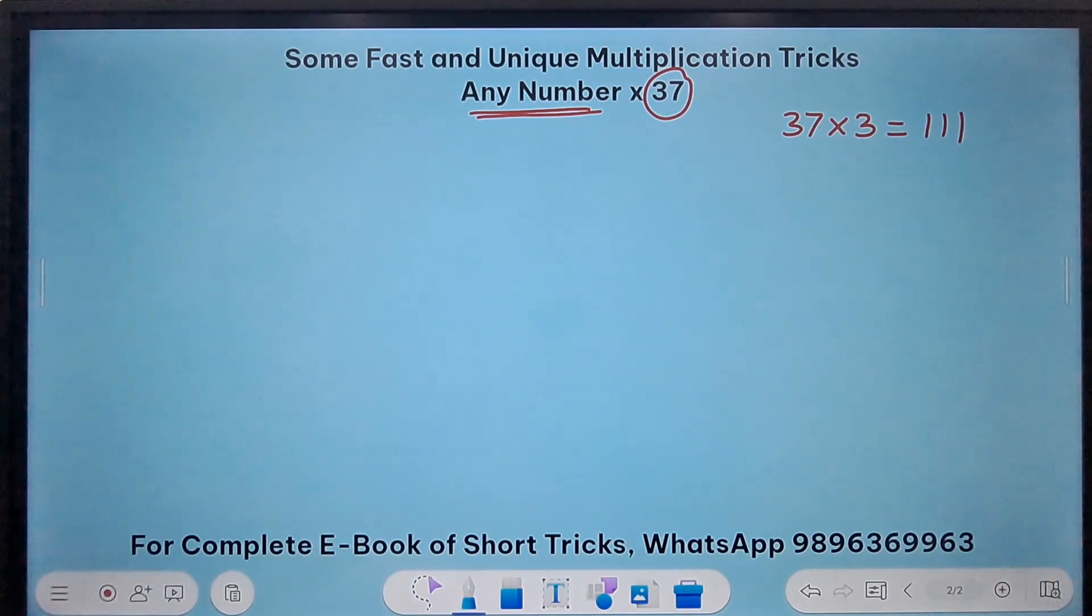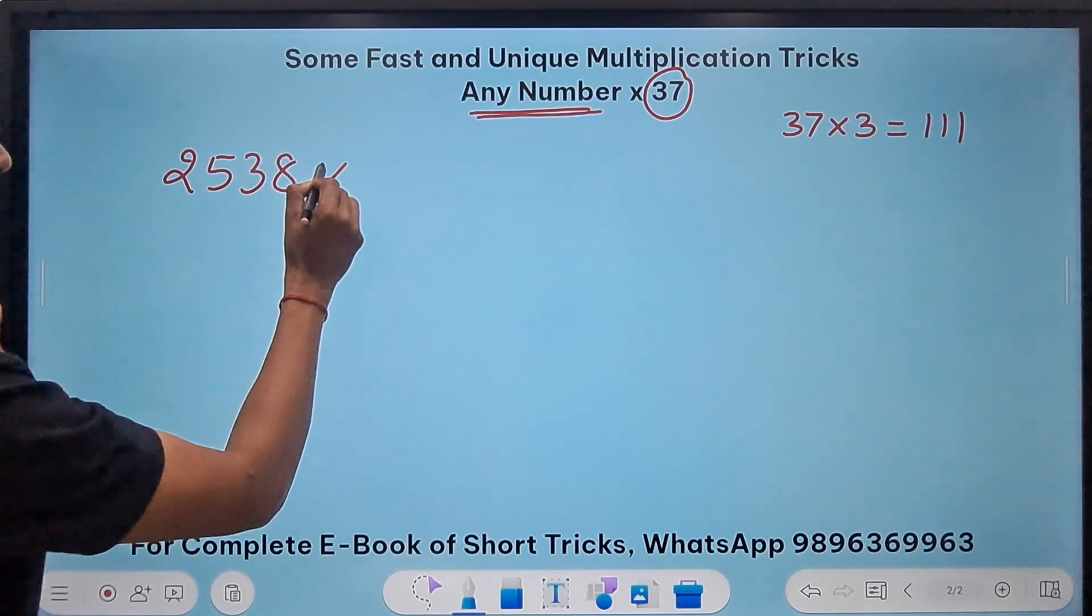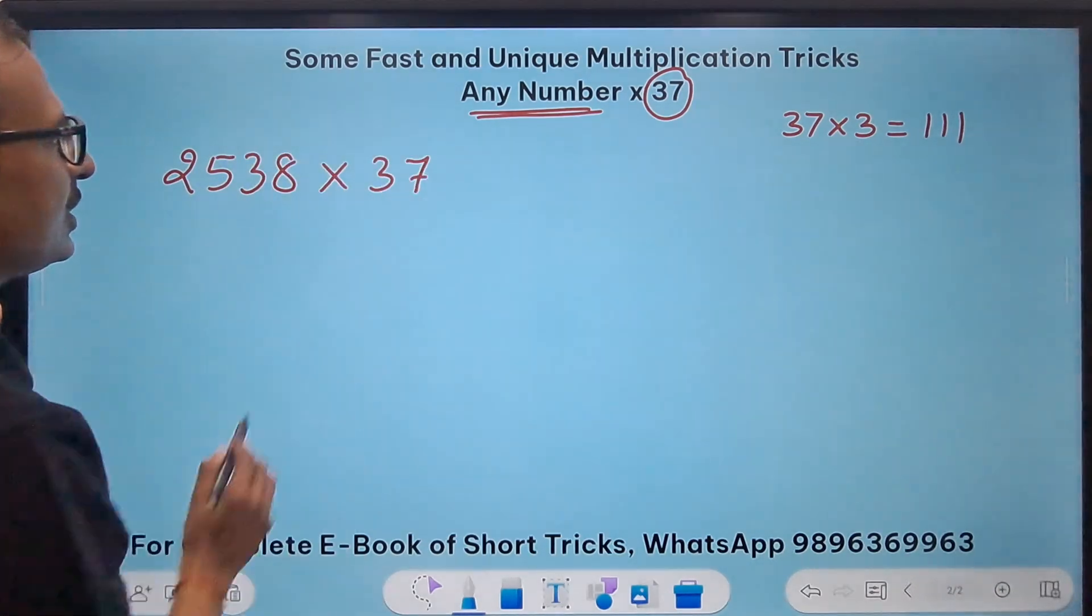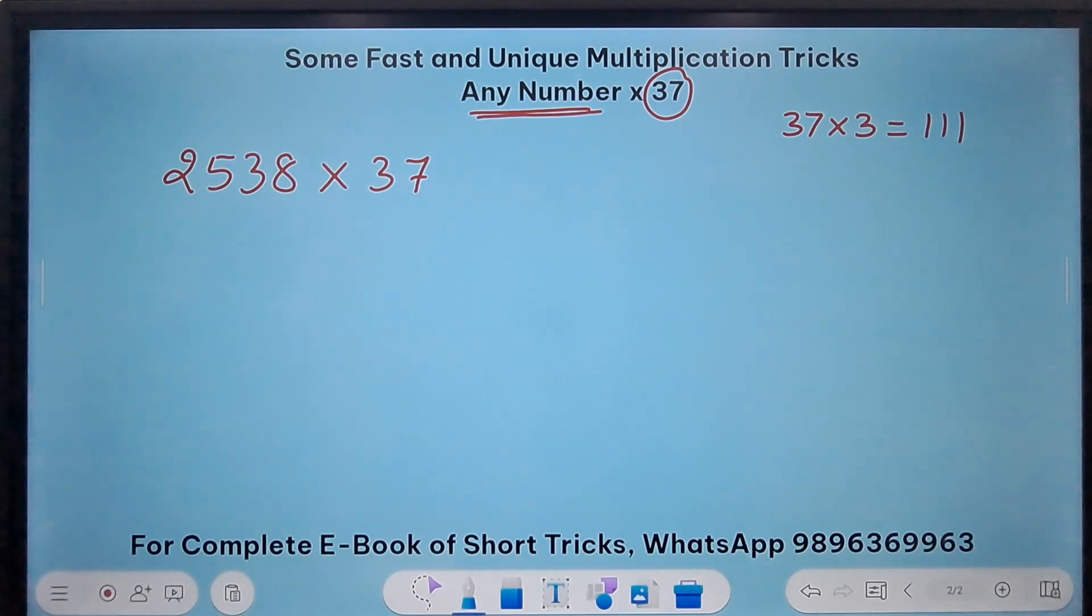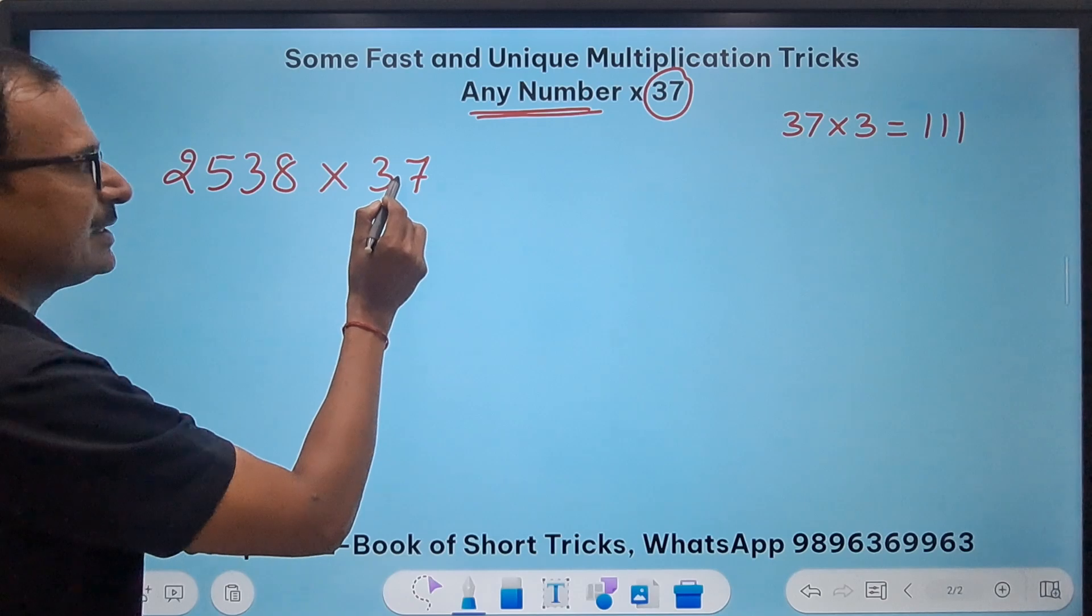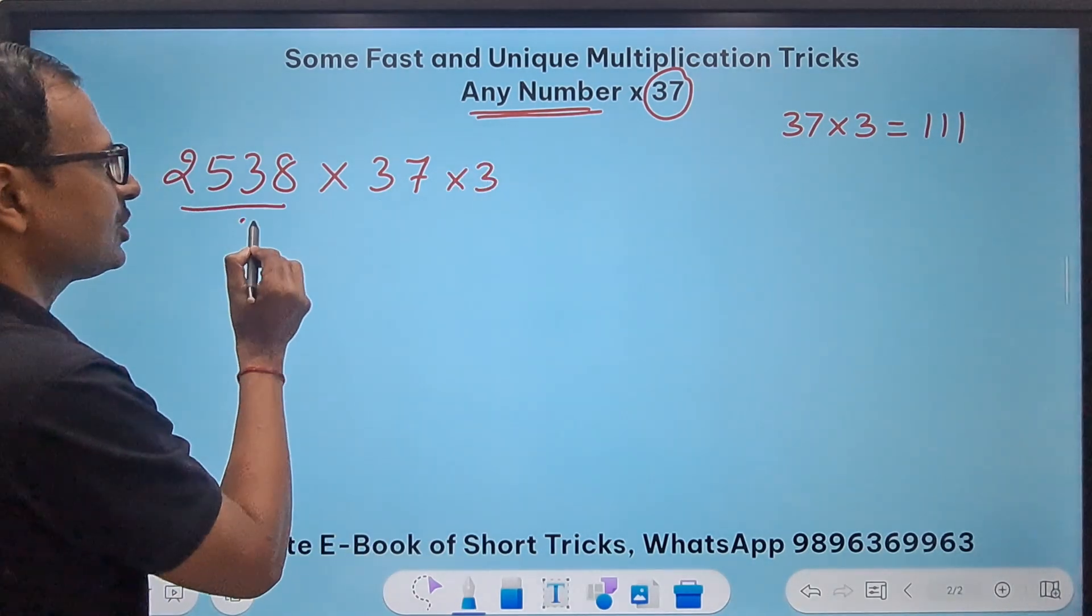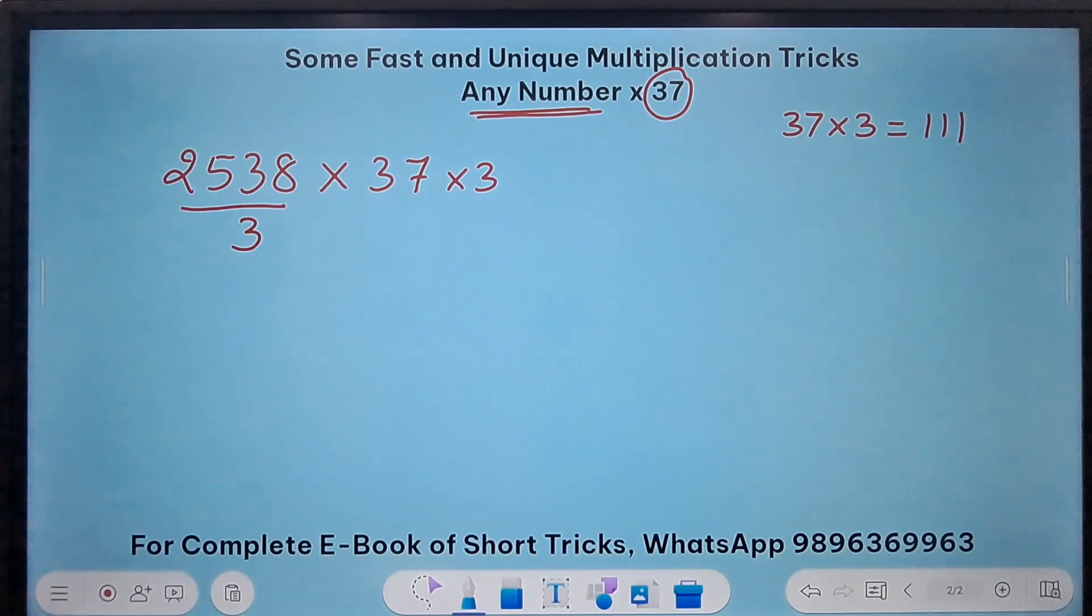An easy example first where I am doing 2538 the 4-digit number by 37. So if I want to convert this 37 to 111 I need to multiply this by 3 right. So if I multiply this by 3 I have to perform the division also by 3 so that the question doesn't change.